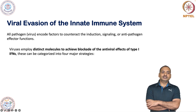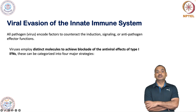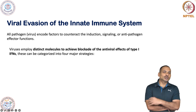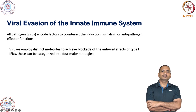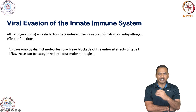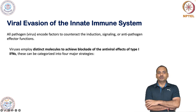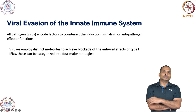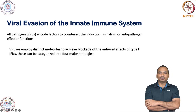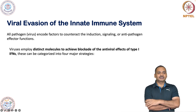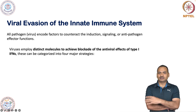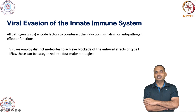Viruses employ distinct molecules to achieve blockage of the antiviral effect of type 1 interferon. Type 1 interferon is very pivotal in checking viral replication, particularly in innate immunity. This type 1 interferon does that job, and so viruses must have developed some way to evade this interferon. There are several ways by which they evade the type 1 interferon effects.